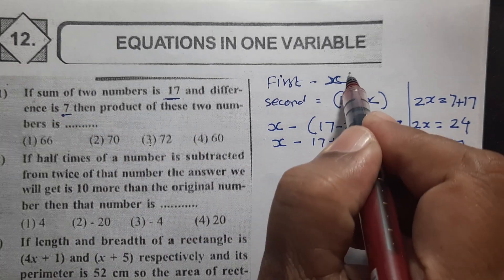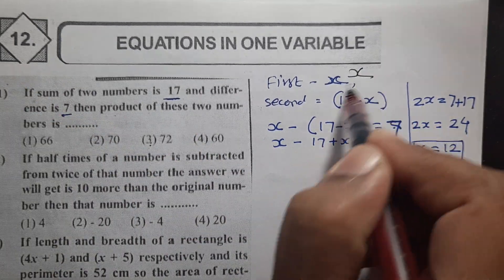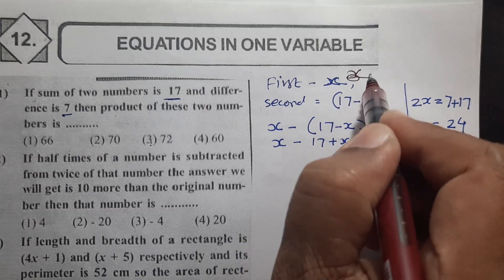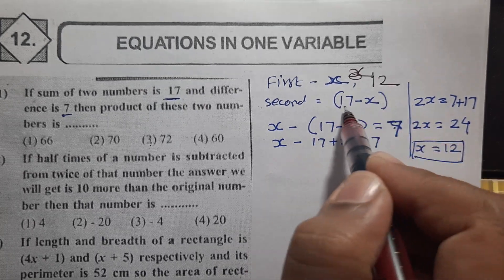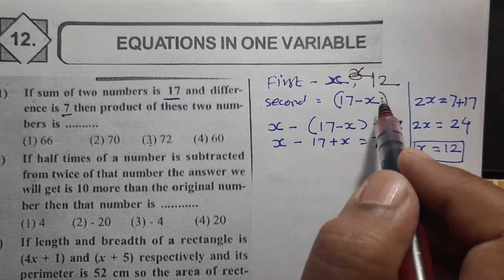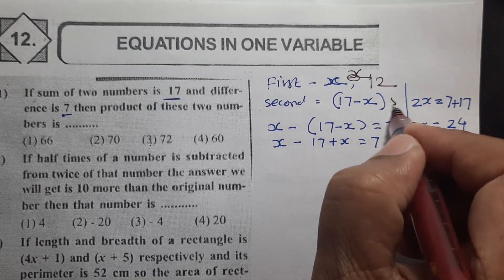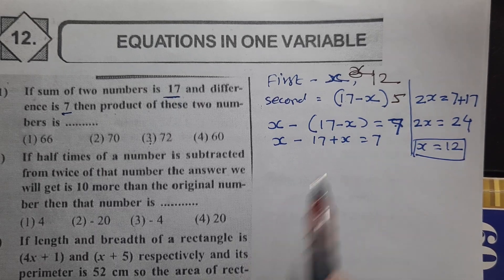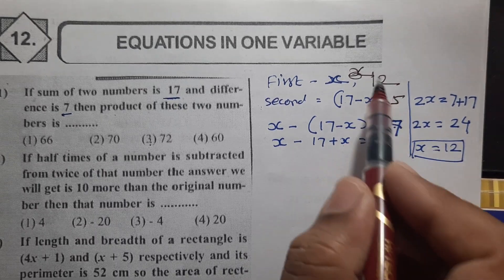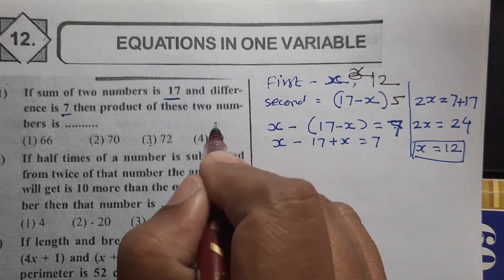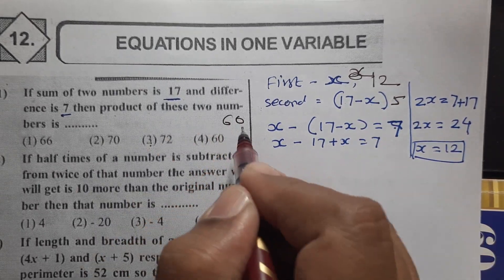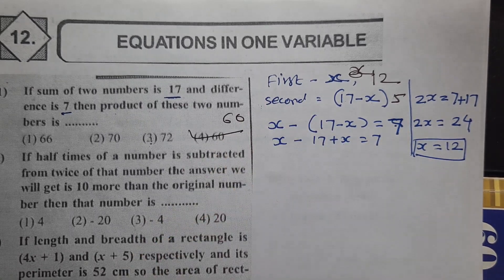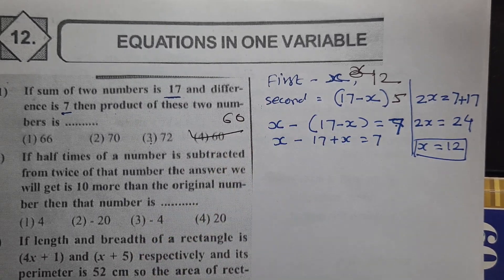So x equals 12, the first number. The second number is 17 minus 12, which is 5. The product is 12 into 5, which is 60. The answer is option number 4.